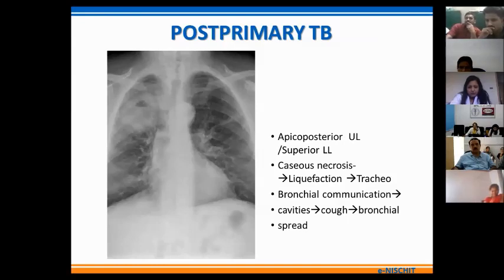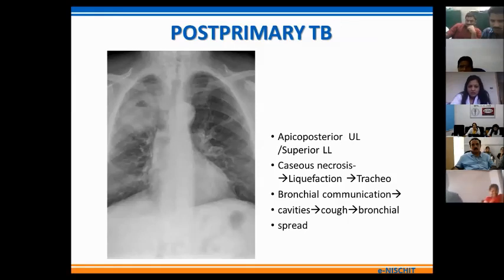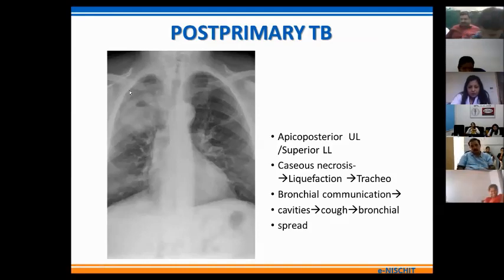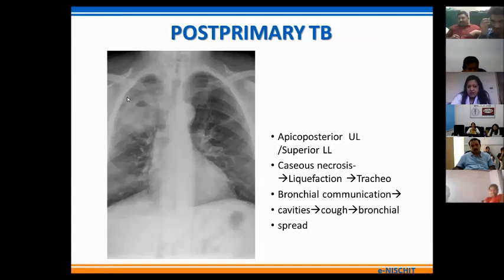The infection in post-primary TB starts as an area of consolidation in the upper lobe, mostly affecting the apicoposterior segments of the upper lobe or the superior segments of the lower lobe. Initially there is an area of consolidation consisting of caseous necrosis. Gradually, liquefaction of this consolidation occurs, and as communication with the airway develops, cavities form. Due to coughing there is further bronchogenic spread to other lung zones. This X-ray shows an area of opacity in the right upper mid zone with some fluid level, representing impending cavitary changes and liquefaction.